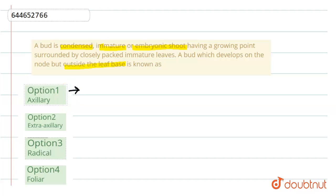So here is the first option, axillary bud. Axillary buds are those buds that develop in the axil, that means grow on the axil of leaf base. When we see the question, it asks for outside the leaf base. The second option is extra axillary bud. Extra axillary buds are